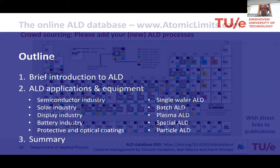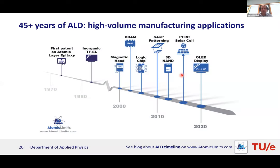A timeline from 1974 to the present shows ALD's evolution: first patent in 1974, first application in thin-film electroluminescent displays, semiconductor industry interest growing from the early 2000s (logic and memory), and now many other applications in high-volume manufacturing including solar cells and OLED displays, as well as numerous niche applications.